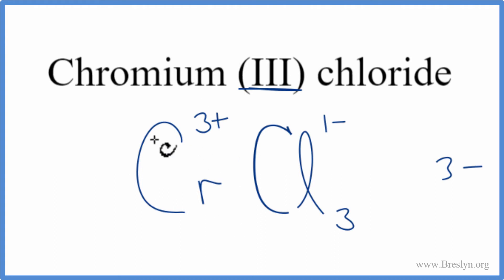One chromium, one times three plus, that's three plus. So three plus, three minus, net charge is zero. This is the correct formula for chromium three chloride.